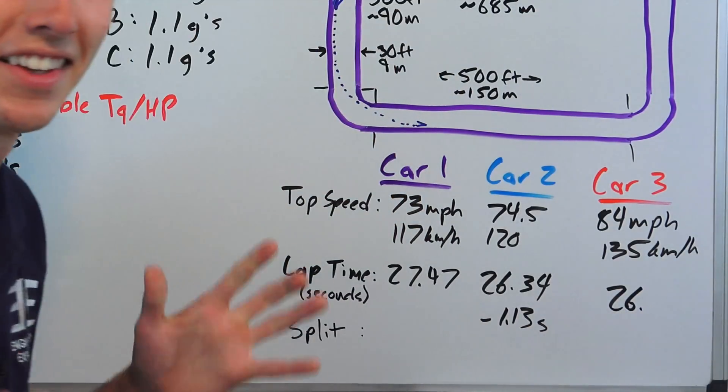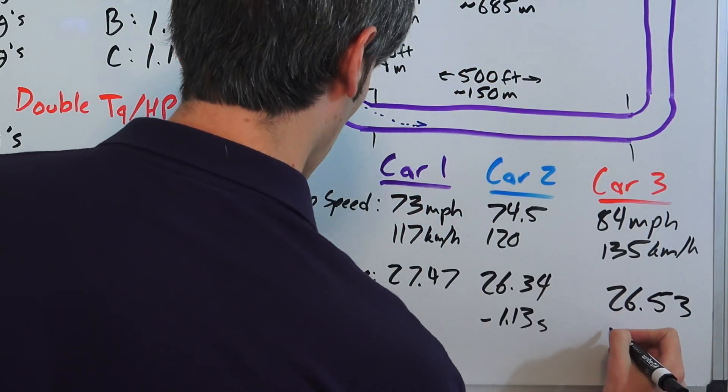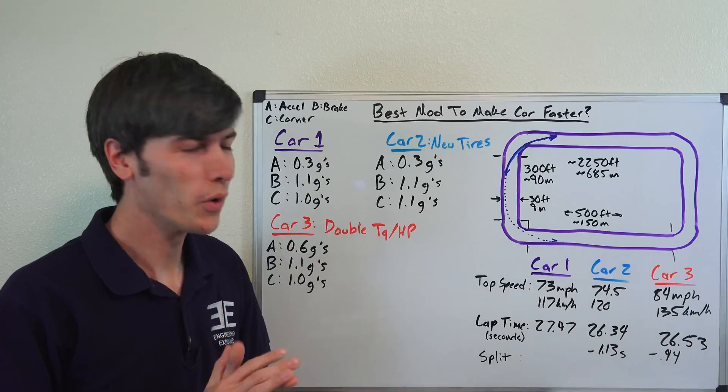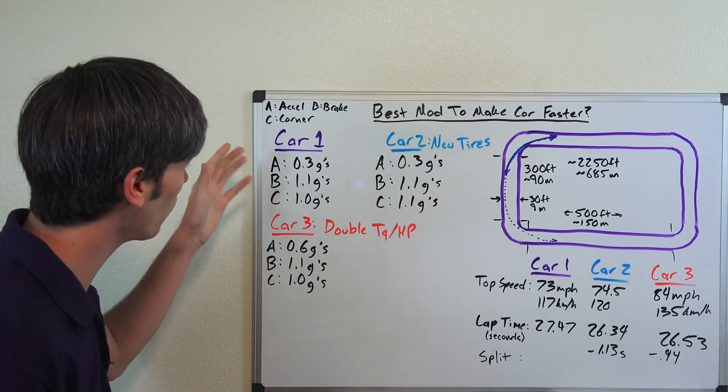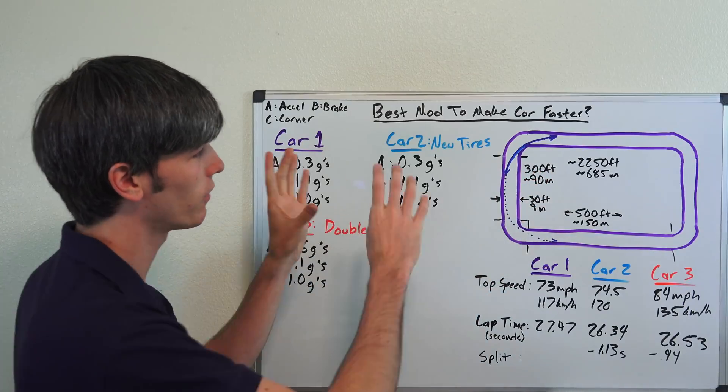This will give us a track time of 26.53, so a split of 0.94 over the original car. So here's the crazy thing: we took a car, we doubled its horsepower, we sent it around this track. Yes, it is a tight track. If you were to have longer straights you would have an advantage in a car with more power.